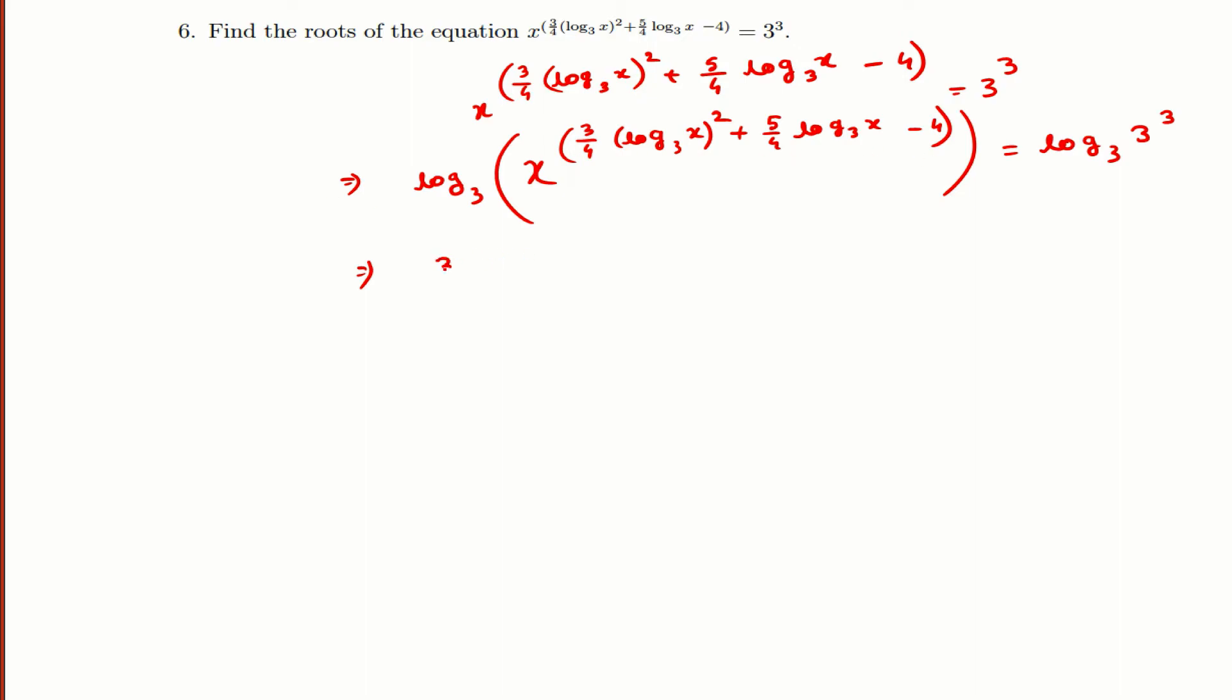This power will come in front. We will get 3/4 log base 3 x whole square plus 5/4 log base 3 x minus 4 times log base 3 x equal to—this 3 will also come in front—so we get log base 3 of 3, which is 1, and we will get 3.